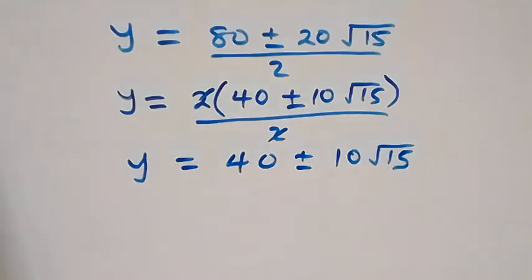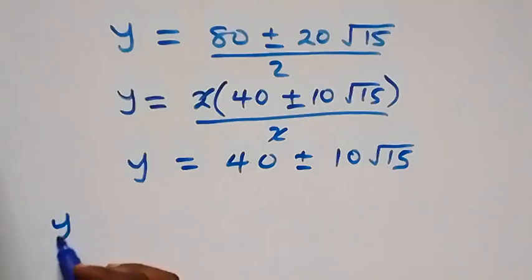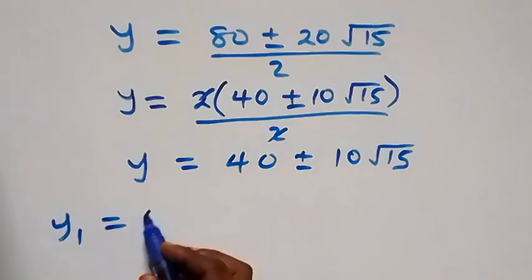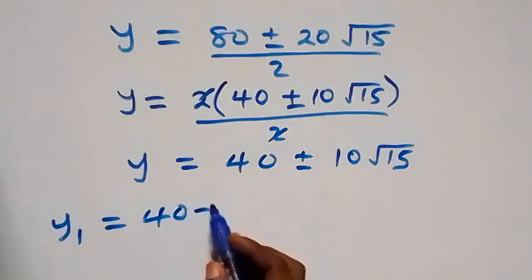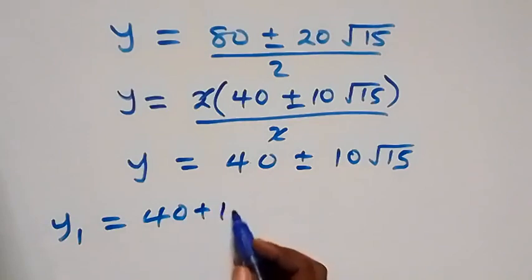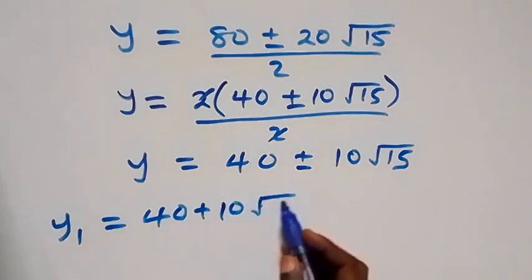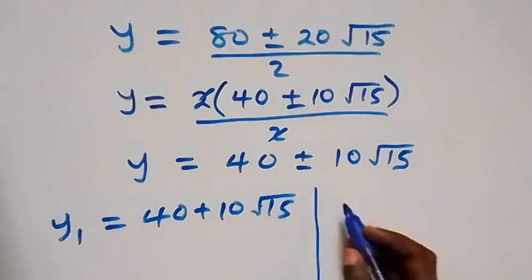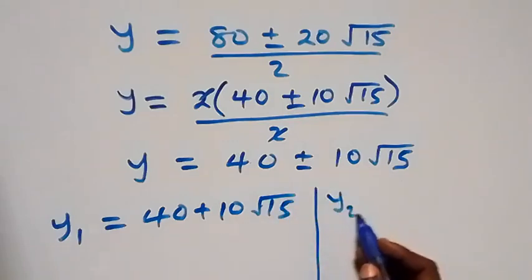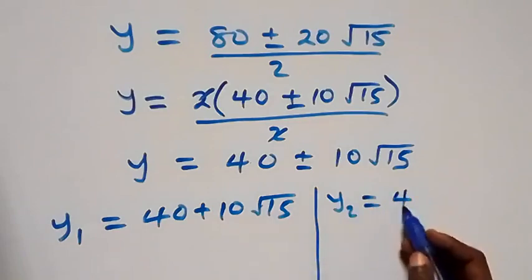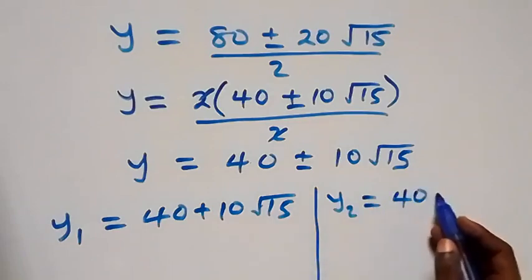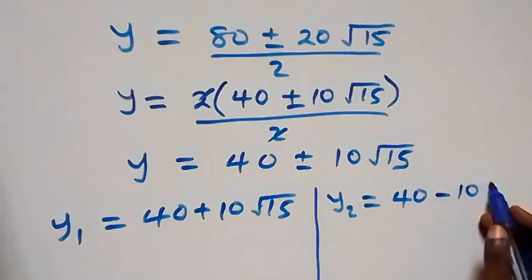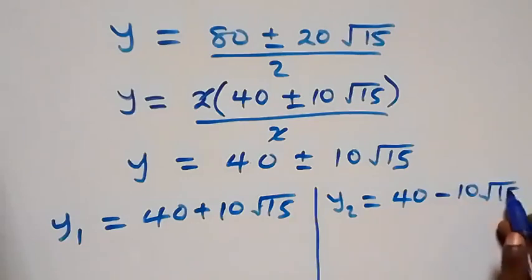So we have two values for y: y₁ = 40 + 10√15 and y₂ = 40 − 10√15.